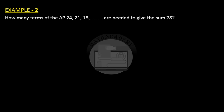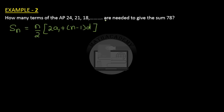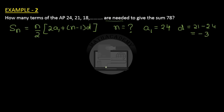Example 2: How many terms of the AP 24, 21, 18, … are needed to give a sum of 78? Here a1 = 24, D = 21 − 24 = −3, and S(n) = 78. We have to find n. The formula is S(n) = n/2 × (2a1 + (n−1)×D).